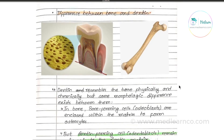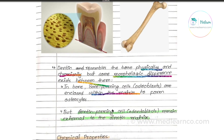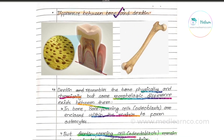Dentin and bone are physically and chemically similar, but there are some morphological differences between them. In bone, the osteoblasts become enclosed in the matrix and are called osteocytes. In dentin, the odontoblast cells remain outside the matrix — their processes extend into the dentinal matrix toward the pulp. This is the key morphological difference between bone and dentin.